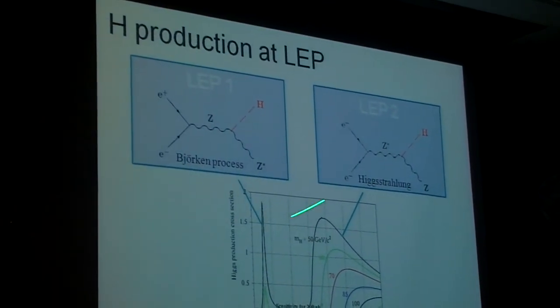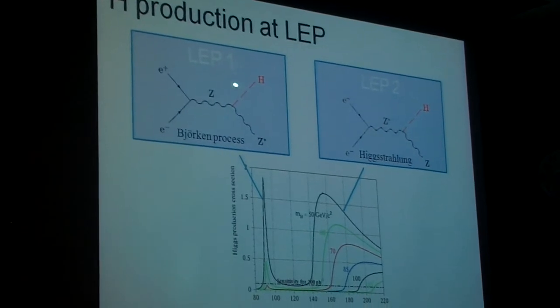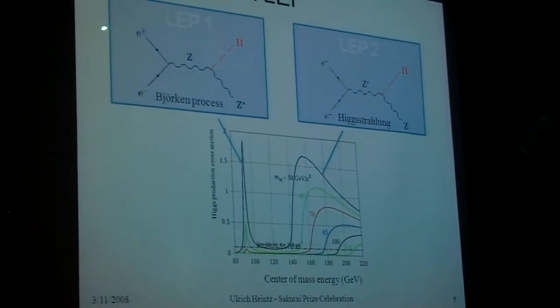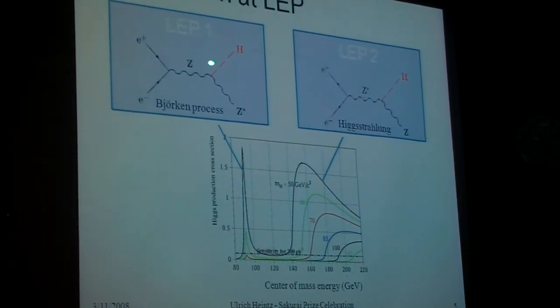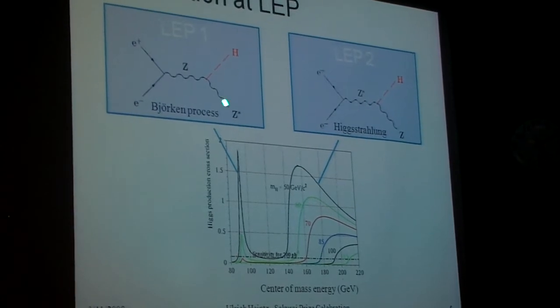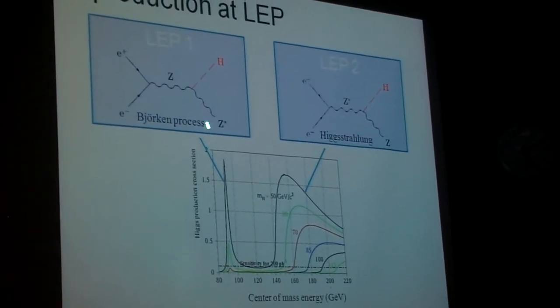So, how is the Higgs boson produced at LEP? Through its coupling with the Z boson. At LEP 1, where the center of mass energy is the Z mass, we get an on-shell Z boson that radiates a Higgs, we get an off-shell Z boson that decays in the final state.